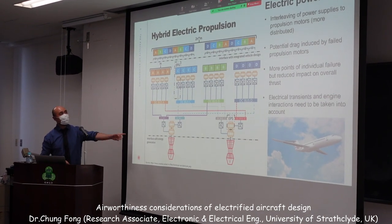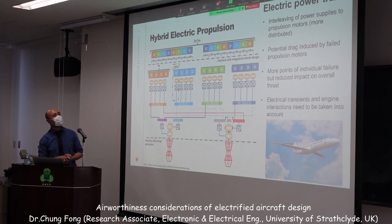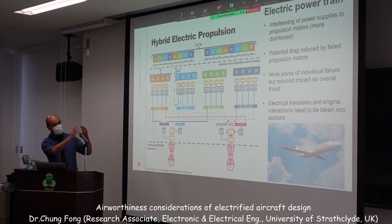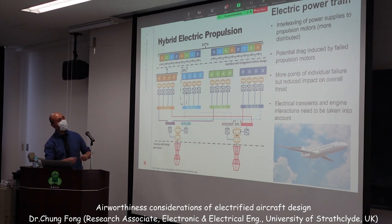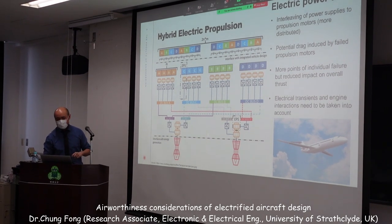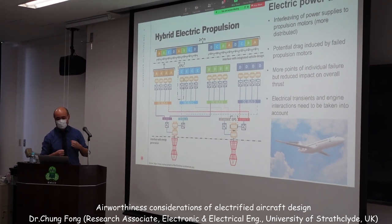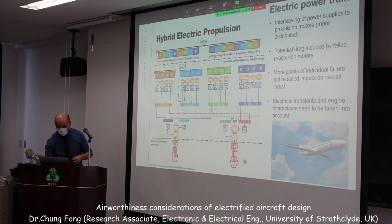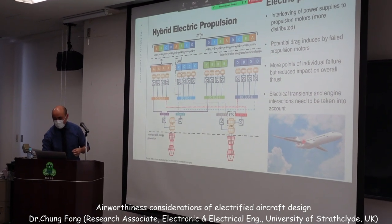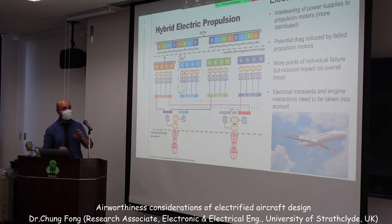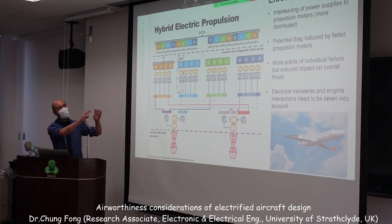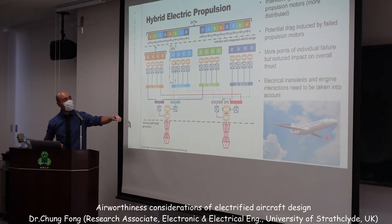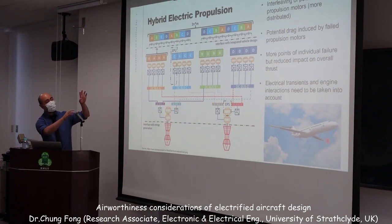This is another example of hyperelectric propulsion — a more distributed architecture where there are multiple electric propulsor units distributed along the wing. In this instance they are interweaved, so if you lose one of the converters or generators you don't necessarily have a complete loss of propulsion.